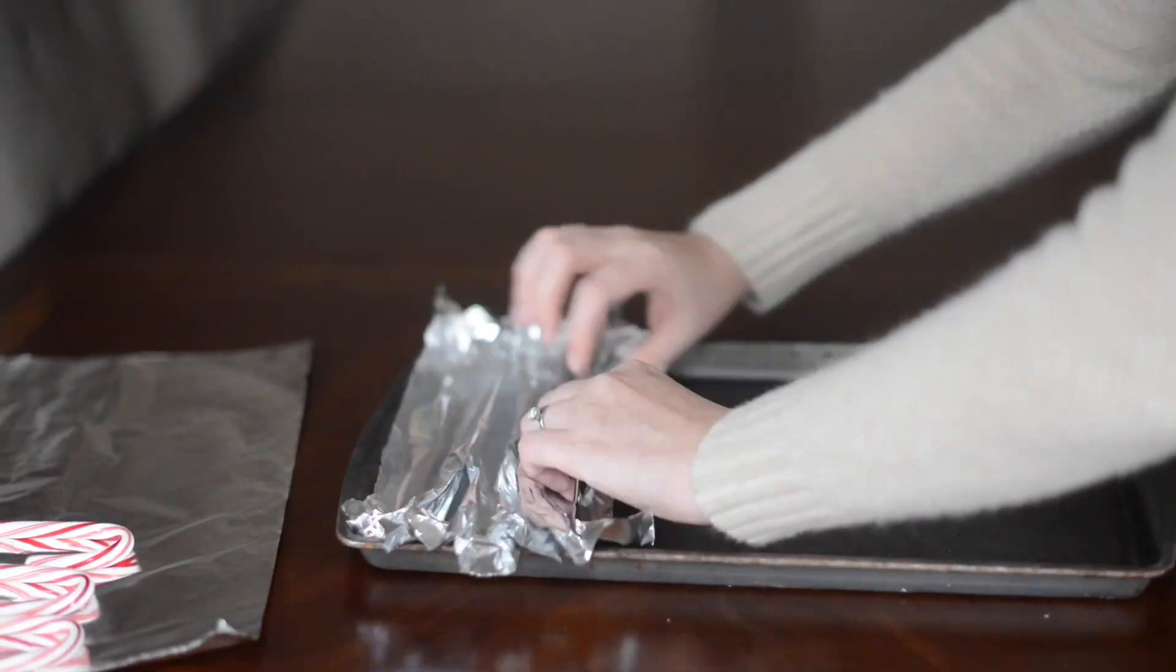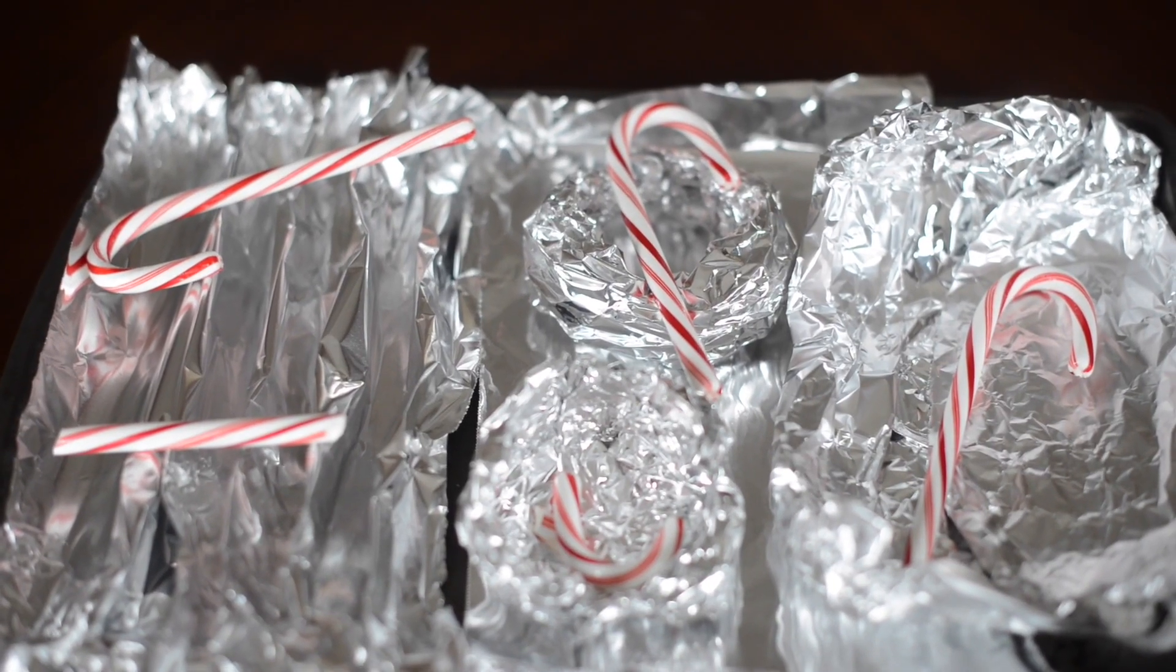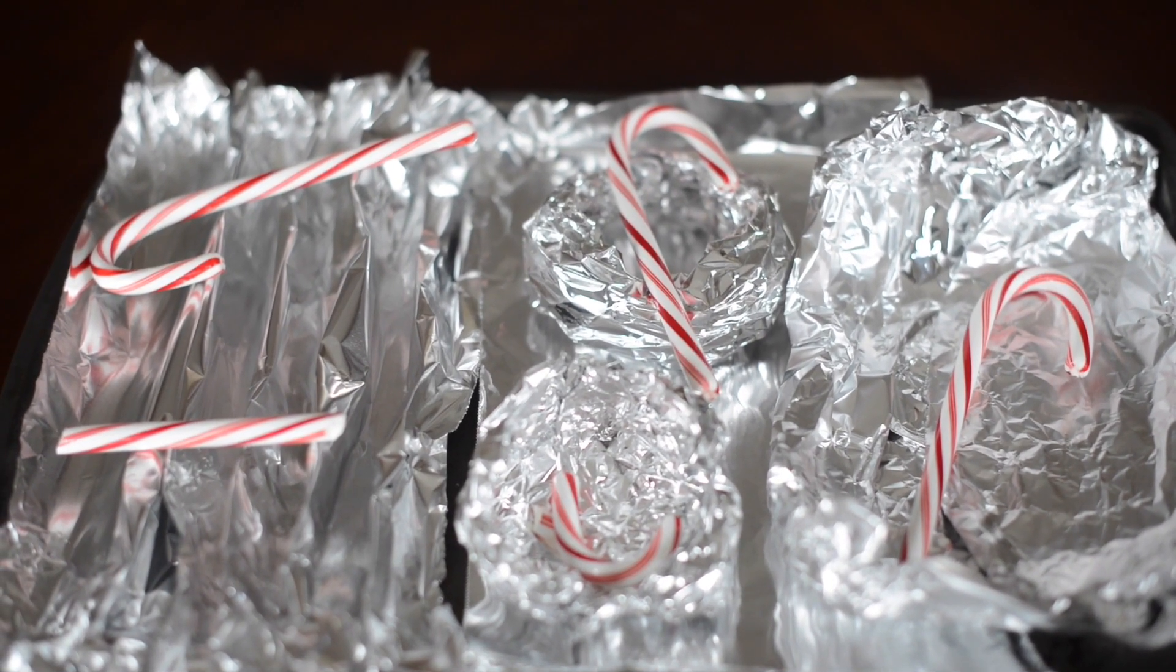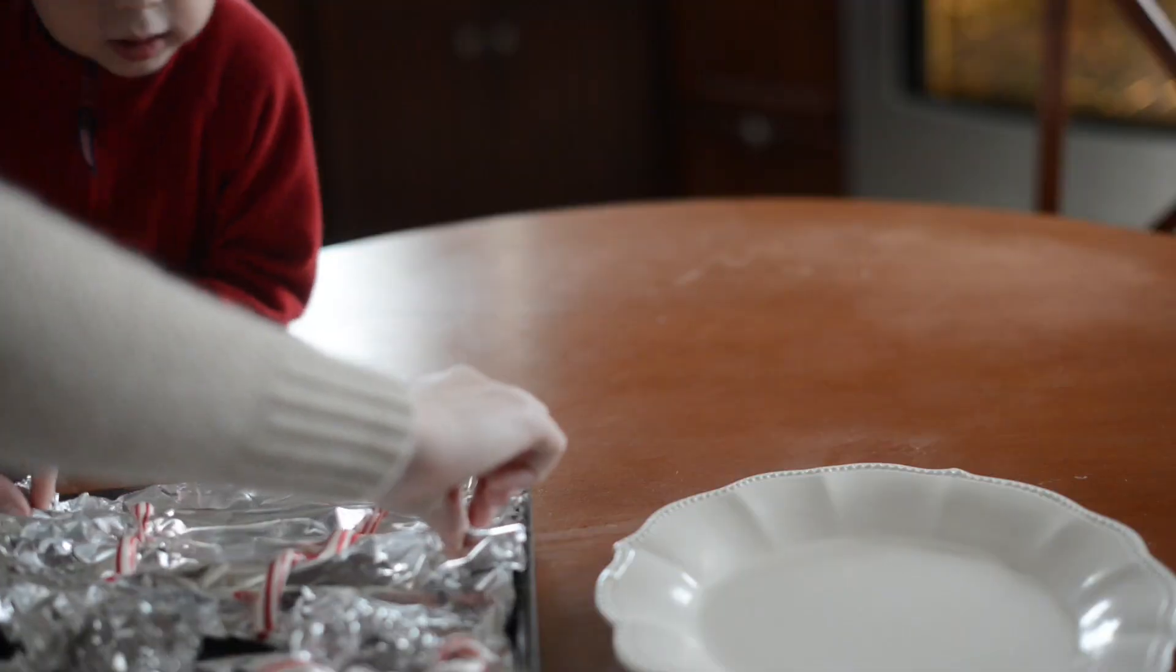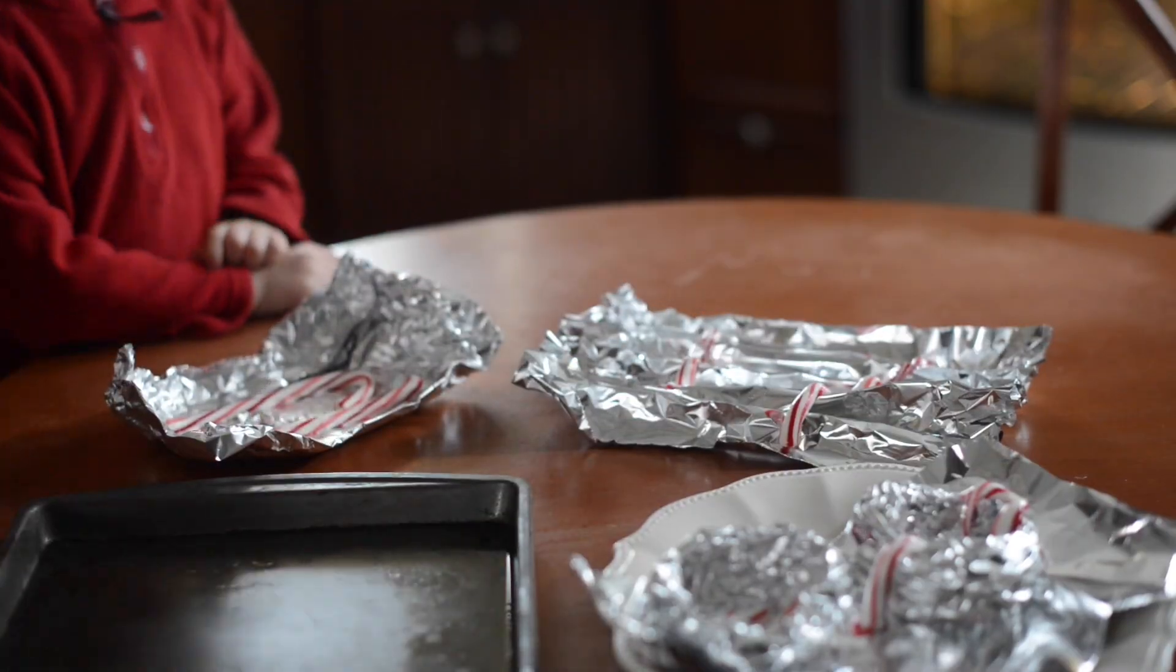Then we bent the tinfoil in different kinds of patterns and guessed what would happen when we put it in the oven. And then we baked it at 350 for about three minutes. And once it cooled for about a minute, it was safe to touch.